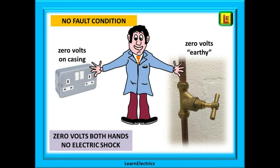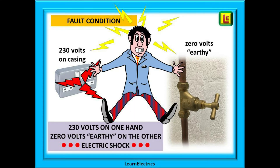We have an example where there is no fault on the installation — everything is okay. Our man Eric is pottering about in his garage; he decides to plug in his radio and leans over to do so. As he does this, he is also touching the water pipe with his other hand — we do these things without thinking. The water pipes go into the ground and so they are regarded as earthy, or zero volts potential. As there is no fault, the socket casing is also at zero volts. Both hands are at zero volts — no problem, no electric shock.